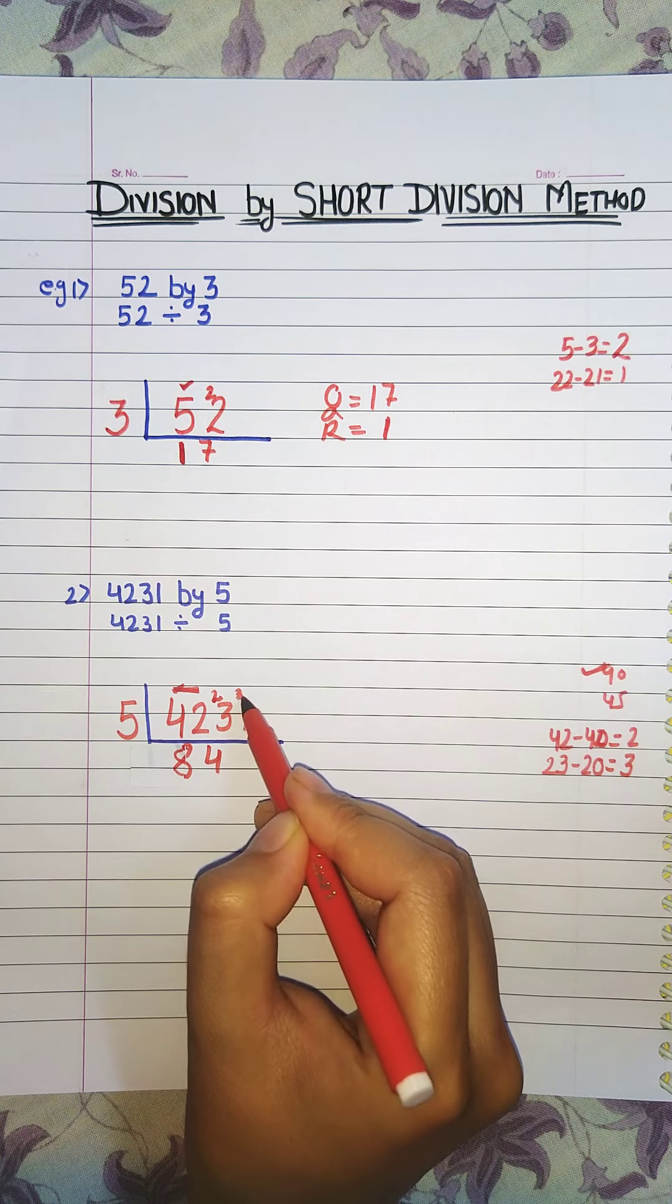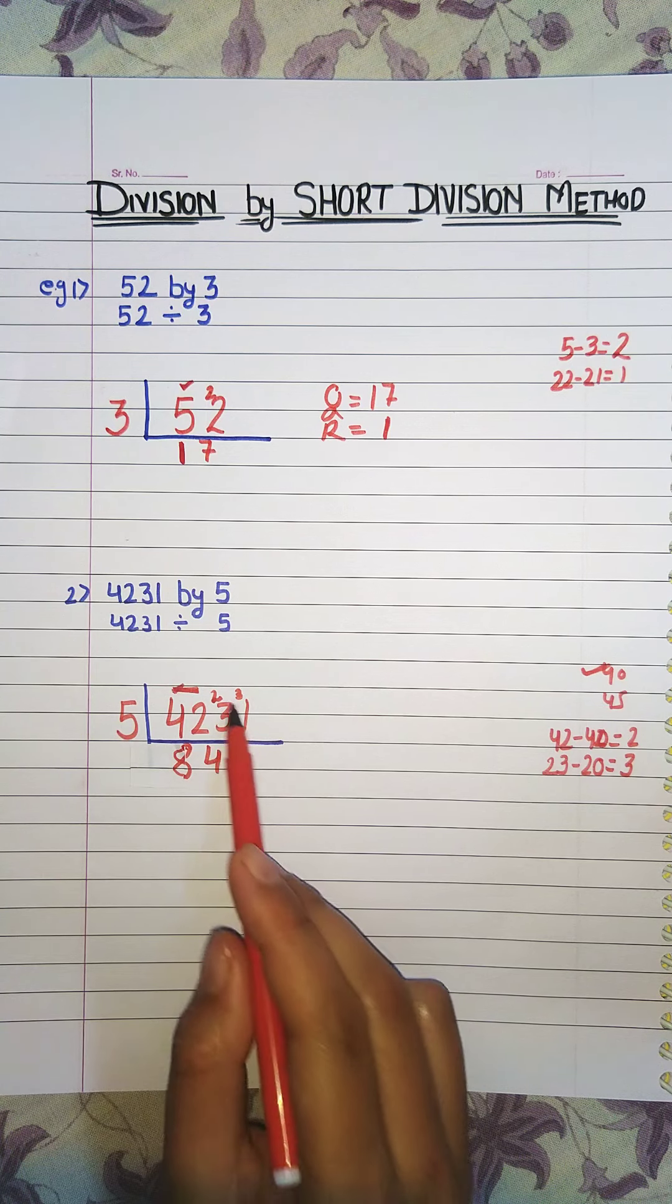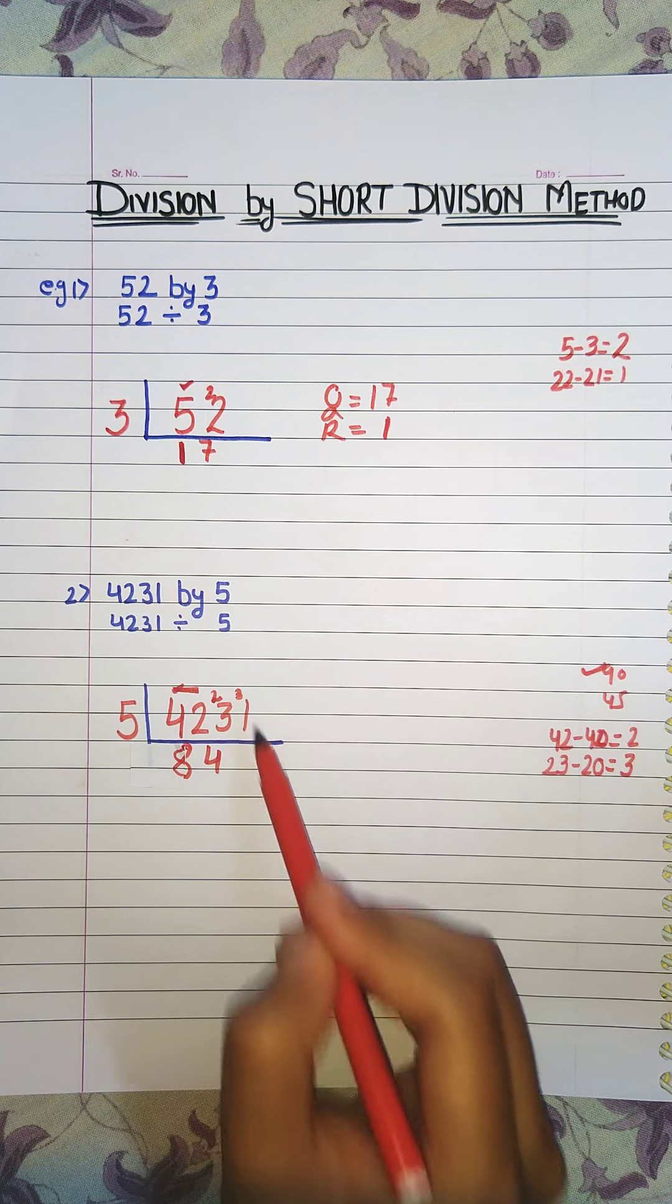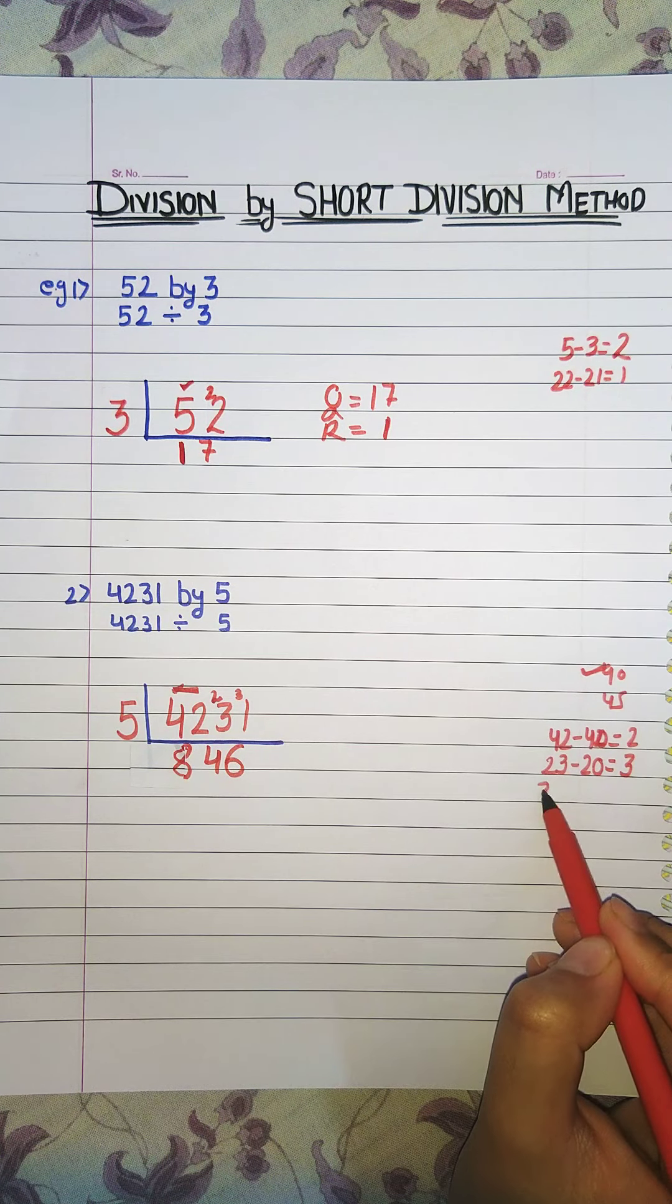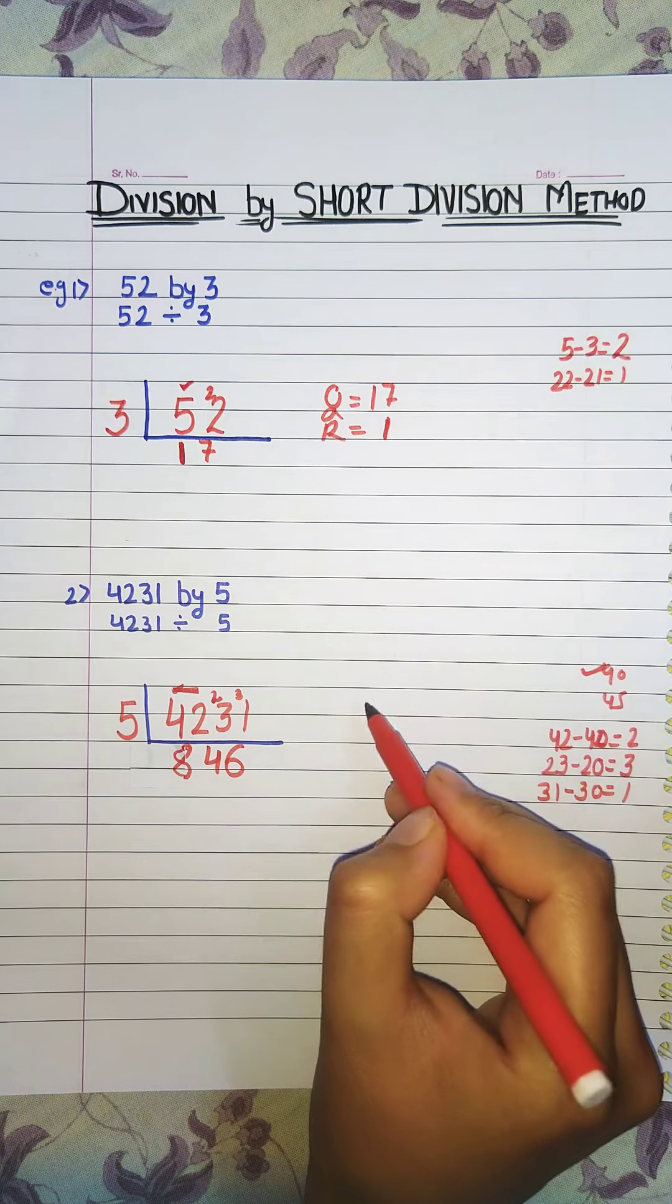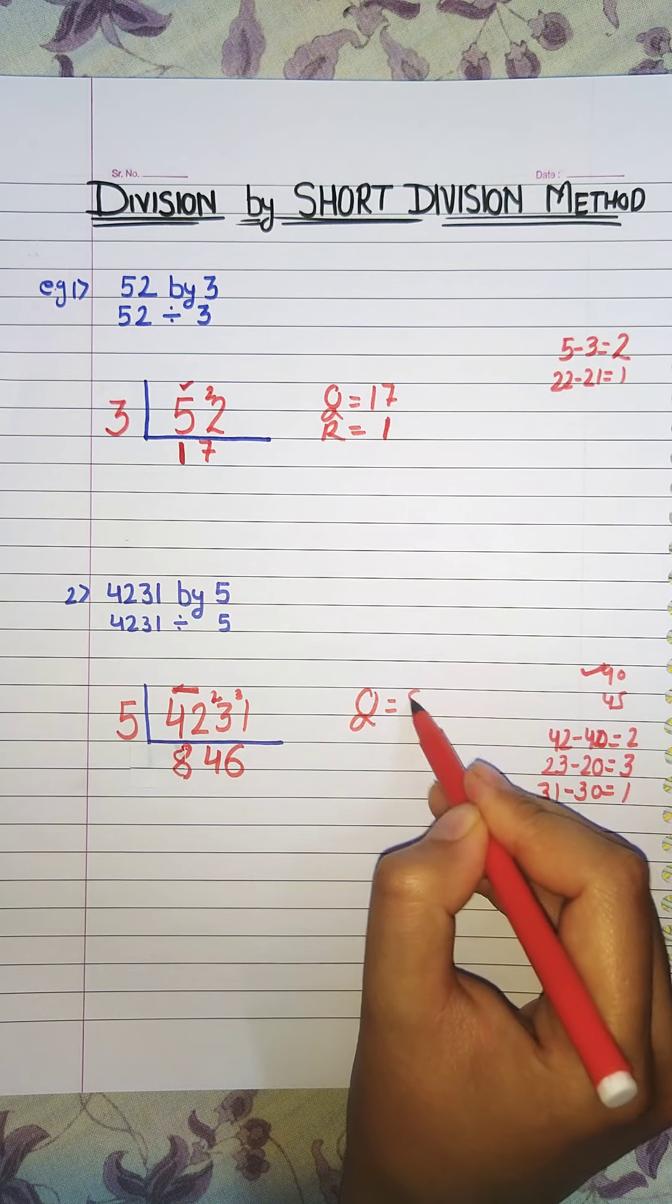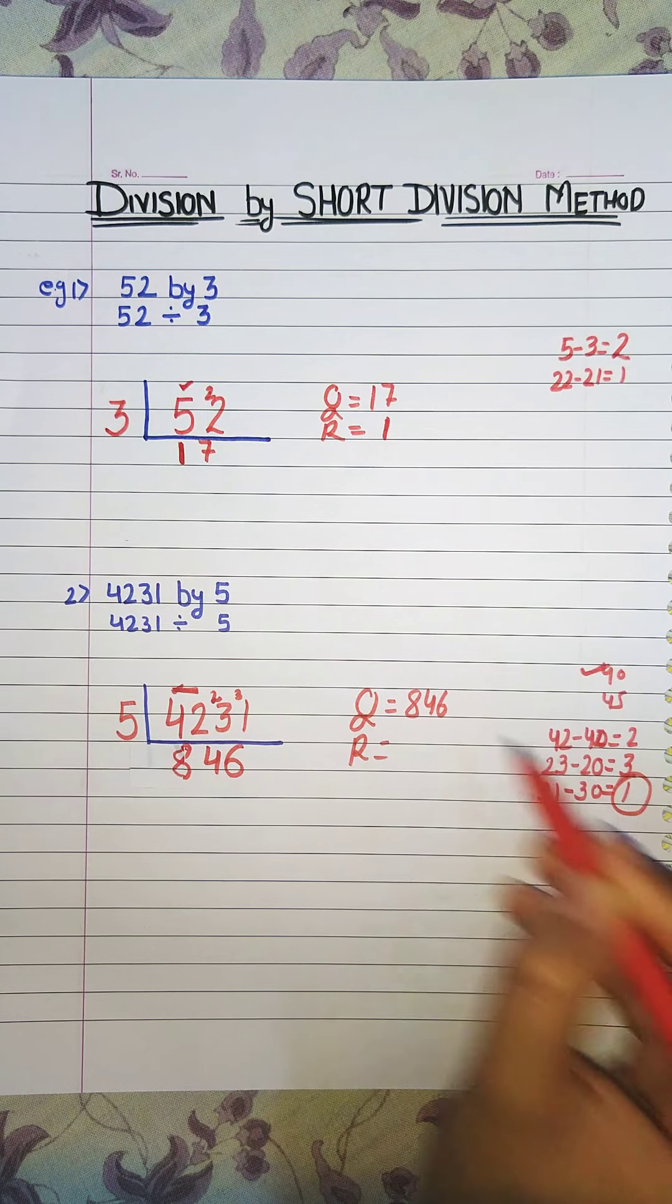Now 3 is carried here. Now table of 5 till we reach 31. So 5 sixes are 30 and in the mind you will do 31 minus 30 that is 1. So quotient is 846 and remainder is this 1.